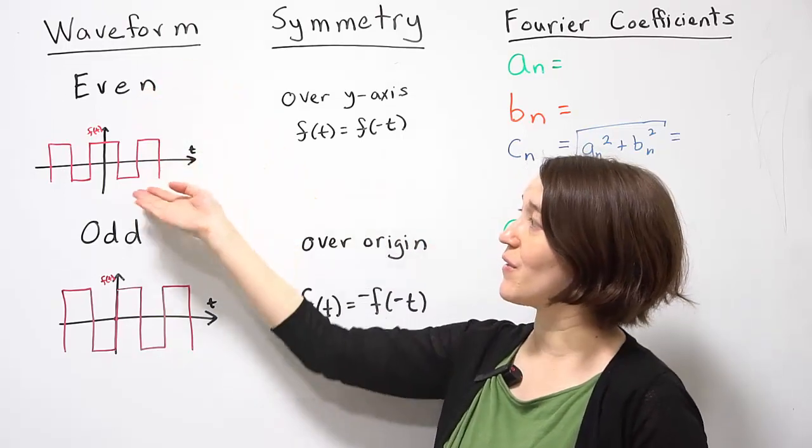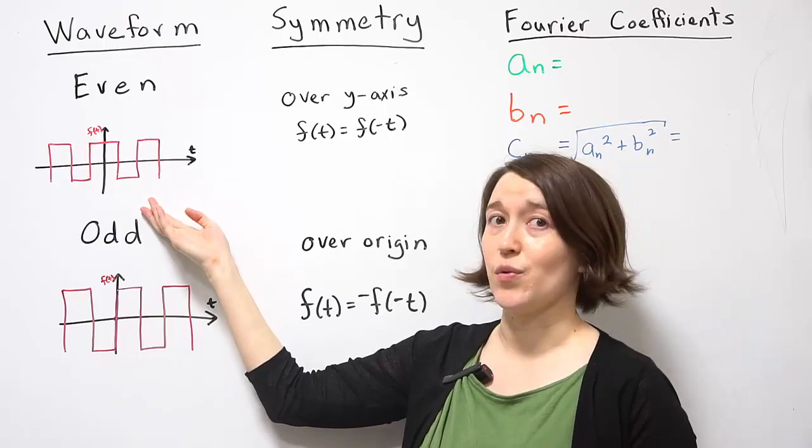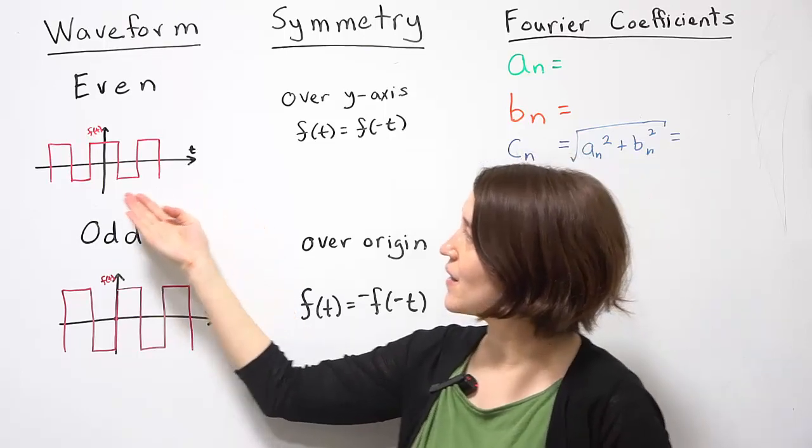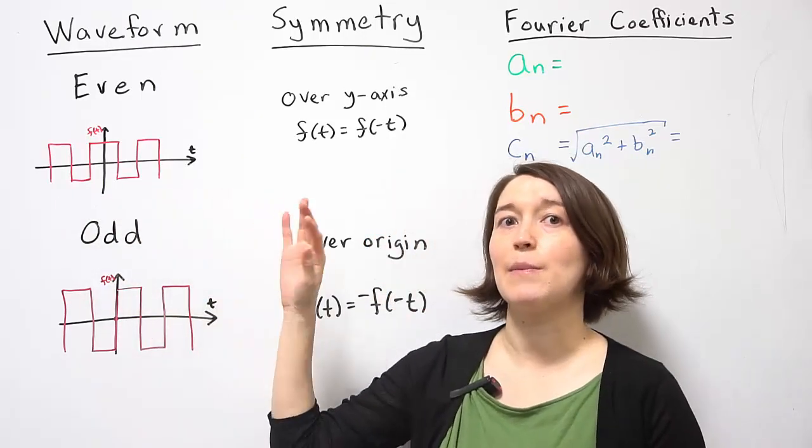So an even waveform, an example is shown here using a square wave. And if you look at this waveform, you see there's a type of symmetry.